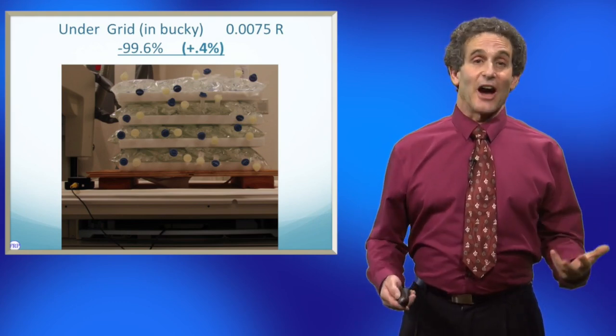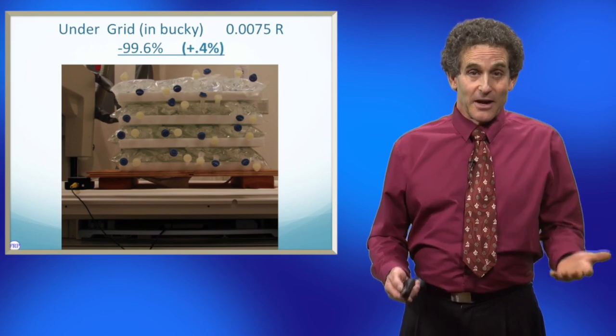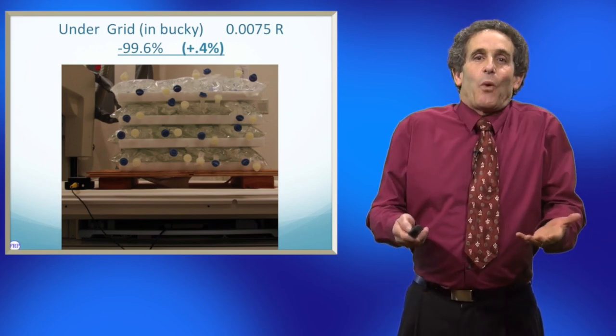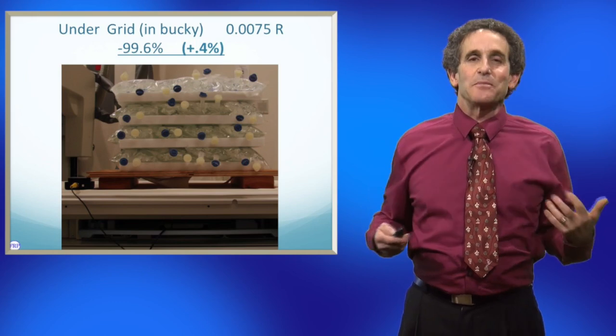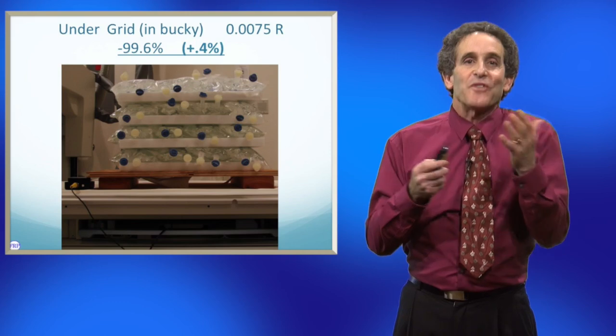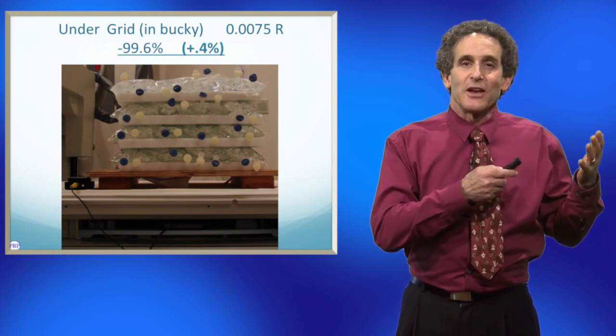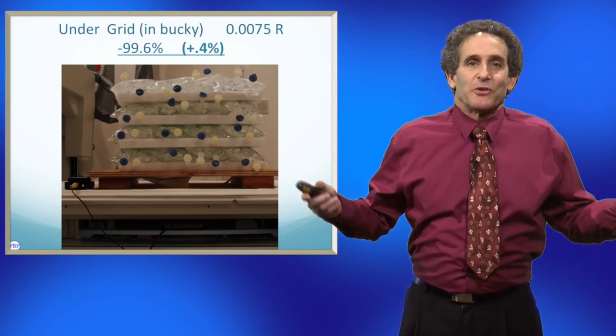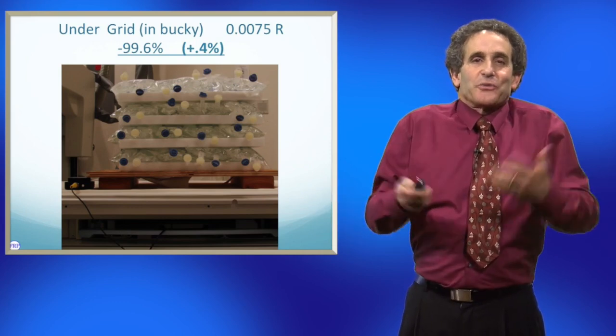So you can see that it's not a very efficient system because 99.6% didn't make it to your IR to create your image. So we're only using 0.4% to create an image. But what an unbelievable image we're creating. It's what we do.